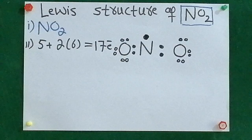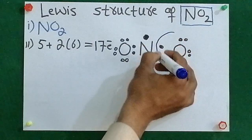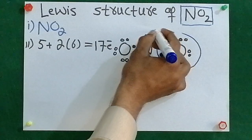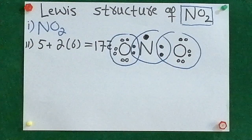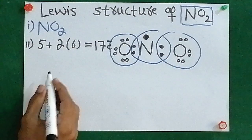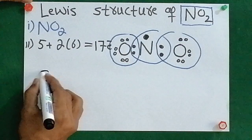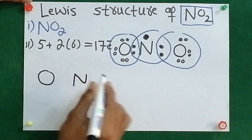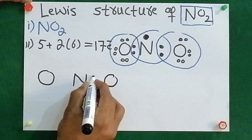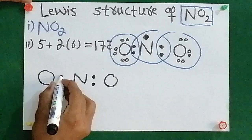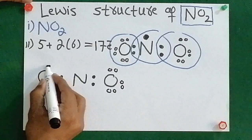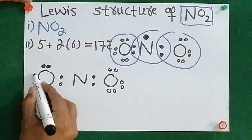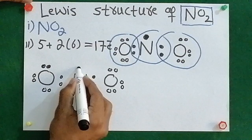Next, what I am going to do is confirm eight electrons for oxygen, five electrons for nitrogen, and eight electrons for this oxygen. So the next structure is going to be: oxygen, nitrogen, and oxygen. Again put a dot between them — two, four, six, eight, 10, 12, 14, 16, and then 17.